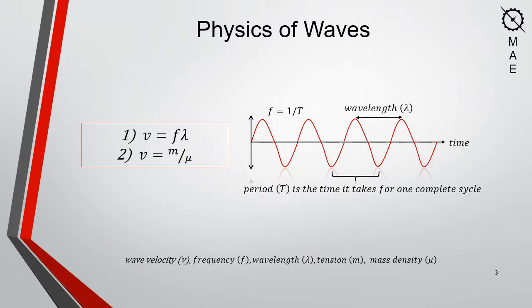When a tensioned string suddenly vibrates, the surrounding air molecules move into vibrational motion as well. The frequency of the vibrating string is equal to the frequency of the air molecules, which creates a pressure wave that travels outward as sound. The speed at which the wave travels is equal to the frequency times the wavelength and is also dependent on the tension and mass density of the string.